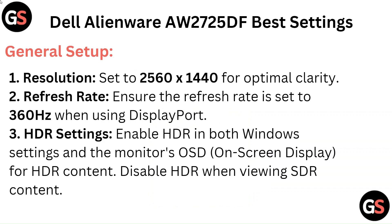Dell Alienware AW2725DF Best Settings — General Setup. Resolution: Set to 2560x1440 for optimal clarity. Refresh Rate: Ensure the refresh rate is set to 360Hz when using DisplayPort. HDR Settings: Enable HDR in both Windows settings and the monitor's OSD on-screen display for HDR content.